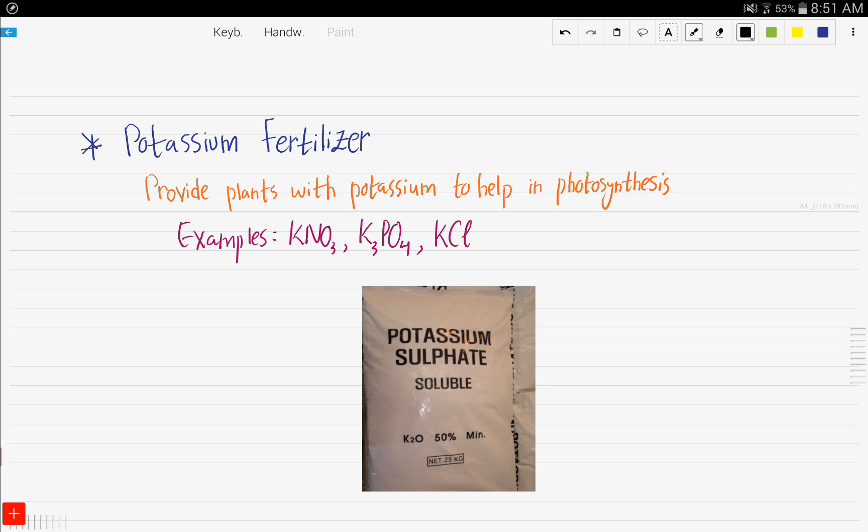Next is potassium fertilizers. These provide plants with potassium to help in photosynthesis. So that's the importance of potassium fertilizers. Now, examples include potassium nitrate, potassium phosphate, potassium chloride, and so on.